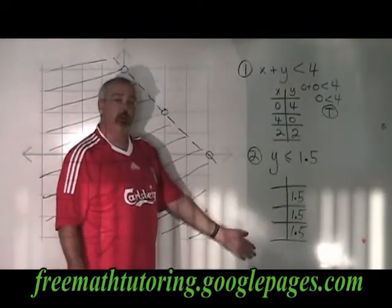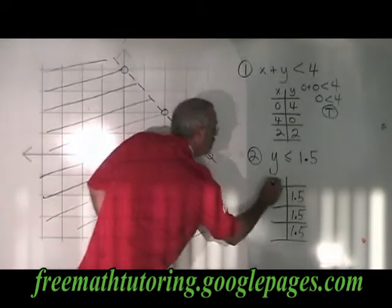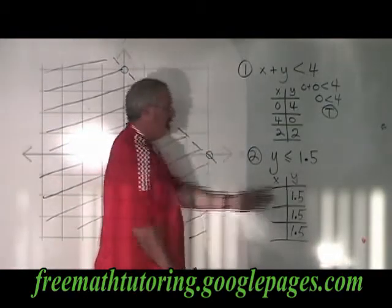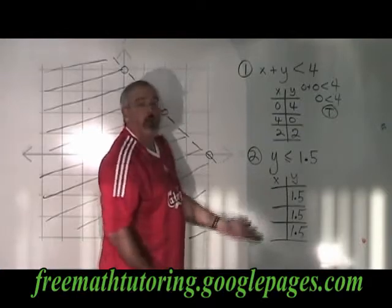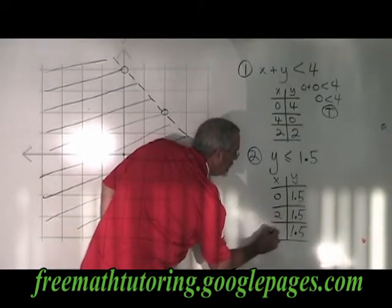I have to finish my table of values. y is equal to 1.5, so the y side of the table is 1.5 all the way down. For the x side, I pick any numbers I want. I'm going to choose 0, 2, and negative 3.